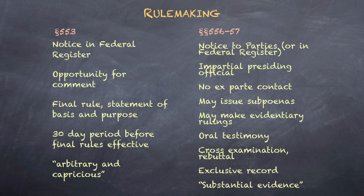We learned from Wyman-Gordon that when they rule-make, agencies should follow Section 553 notice and comment procedures — at least unless there is an APA exception. How can we tell when and whether an agency is supposed to rule-make by following Sections 556 and 557 on-the-record procedures instead?